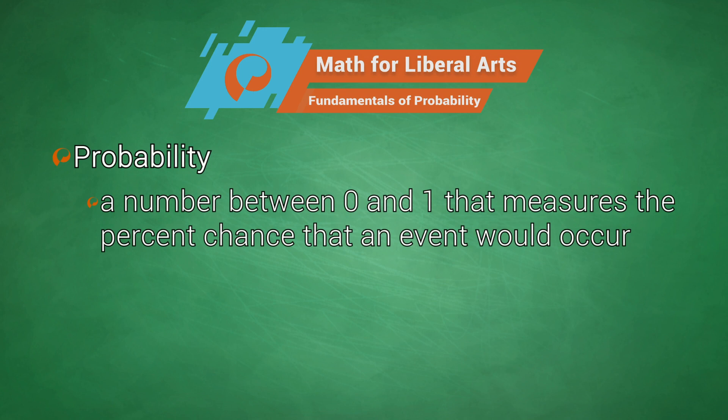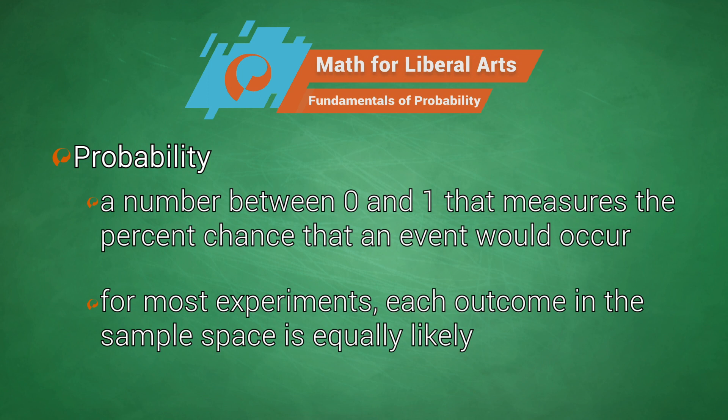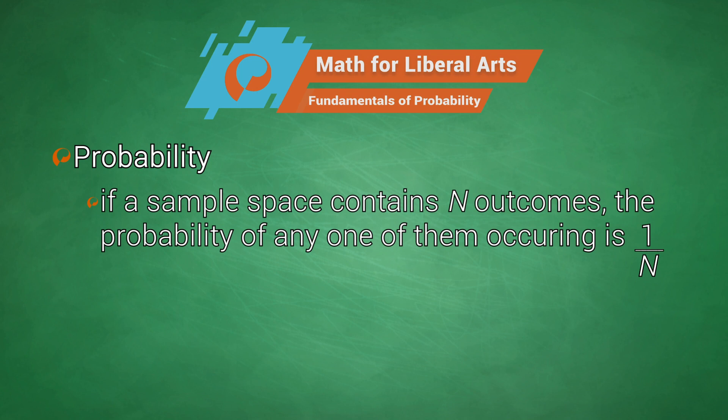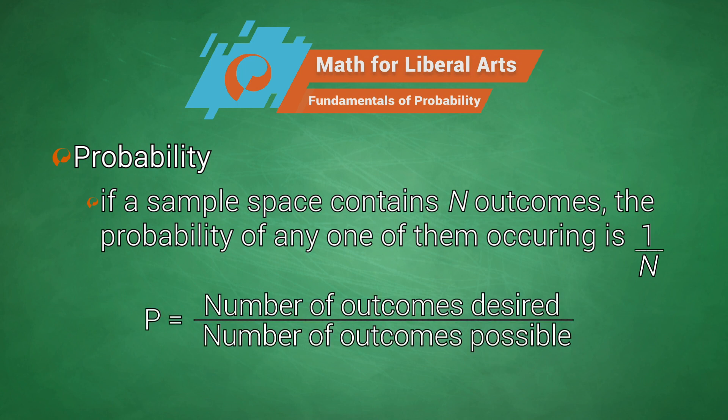The probability of an event is a number between 0 and 1 that measures the percent chance that an event would occur. How is the number computed? For most experiments, each outcome in the sample space is equally likely. If a sample space contains n outcomes, the probability of any one of them occurring is 1 over n. We can also say the probability of a specific event occurring is calculated by the number of desirable outcomes over the number of possible outcomes.